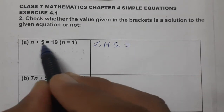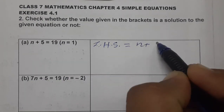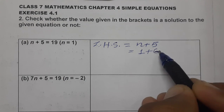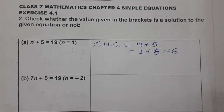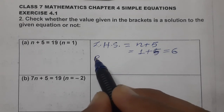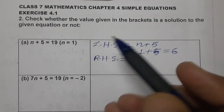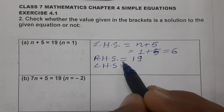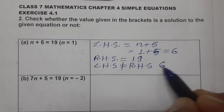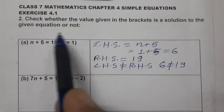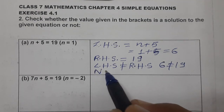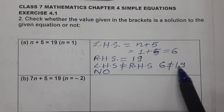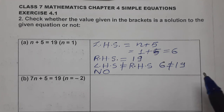Let's check part (a). The left hand side is n + 5. The value of n given to us is 1, so we put n = 1: 1 + 5 = 6. The RHS given to us is 19. Since 6 is not equal to 19, LHS is not equal to RHS. Therefore, n = 1 is not the solution of this equation.